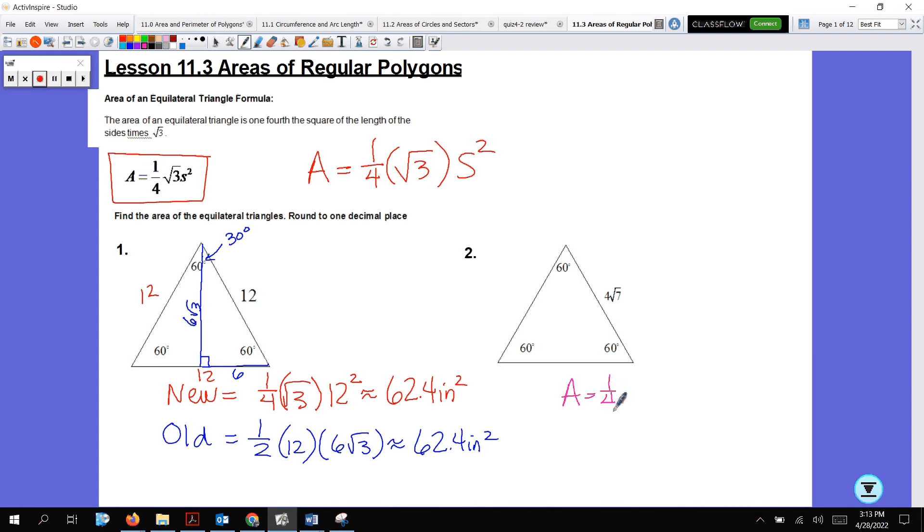So area, one-fourth root 3, 4 root 7 squared. Be really careful when you have 4 with a radical on top. Because when you square the 4, that gives us 16, and then multiply 16 times 7, which is 112. I would suggest using parentheses. When I plug it in my calculator, I do one-fourth times root 3, close it off, open a set of parentheses, 4 root 7, close, close, and square it. And you get 48.5 inches squared.